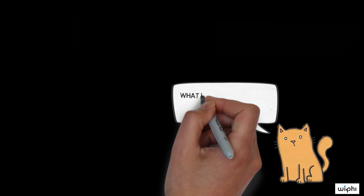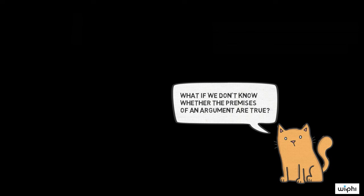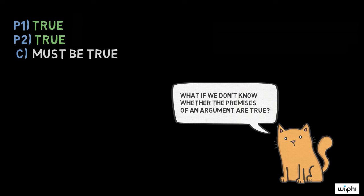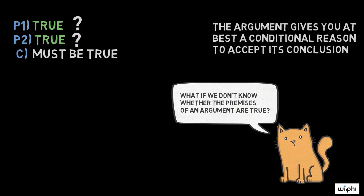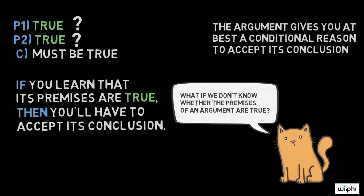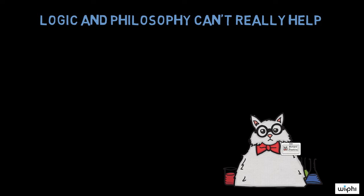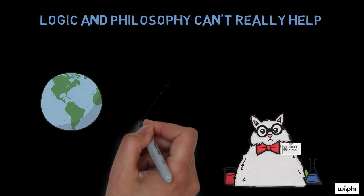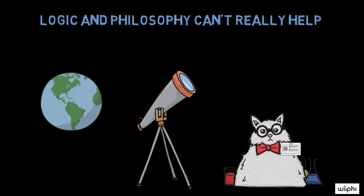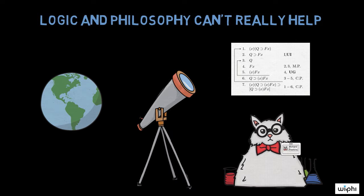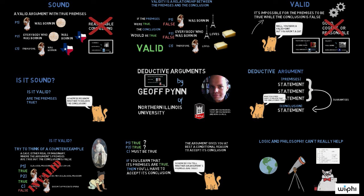Now, if you don't know whether the premises of an argument are true, then even if the argument really is sound, it doesn't give you a good reason to believe its conclusion. When you know that an argument is valid but don't know whether its premises are true, the argument gives you at best a conditional reason to accept its conclusion — if you learn that its premises are true, then you'll have to accept its conclusion. So how do you tell whether an argument's premises are true? Well, this isn't the kind of thing logic or philosophy can give you much help with. To figure out whether an argument's premises are true, you need to do some research. This is one reason why being a good critical thinker requires more than just logical abilities — it also takes a lot of real-world empirical knowledge. The more you know, the better you'll be able to evaluate deductive arguments.